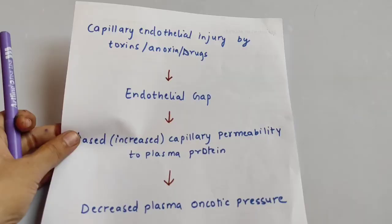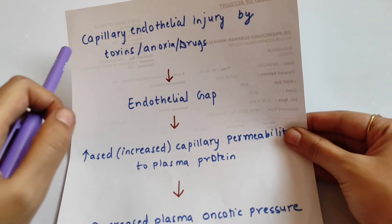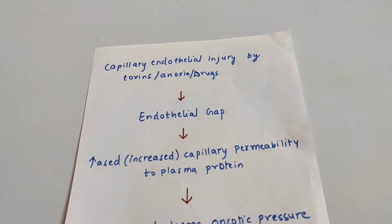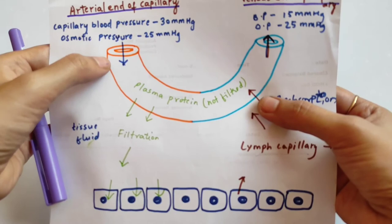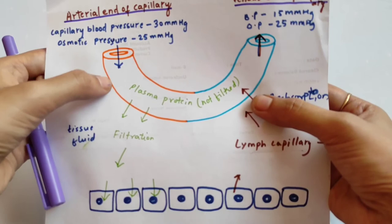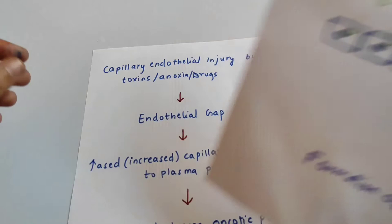Next we will see the pathophysiology of edema. What happens is capillary endothelial lining injury. These capillaries get injured by hypoxia, drugs, or direct injury. The permeability increases, meaning plasma leaks out. So capillary endothelial injury by toxins, anoxia, and drugs leads to increased capillary permeability.